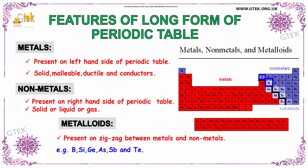The metalloids are boron, silicon, germanium, arsenic, antimony (Sb), tellurium, and polonium (Po). These are all considered as metalloids. The properties of a metal are that it is solid, malleable, ductile, and a conductor.